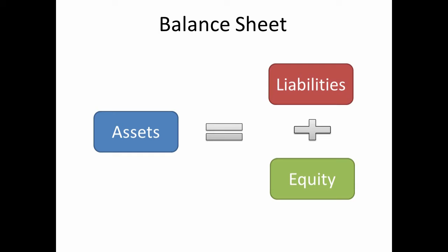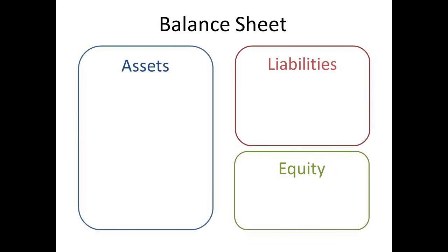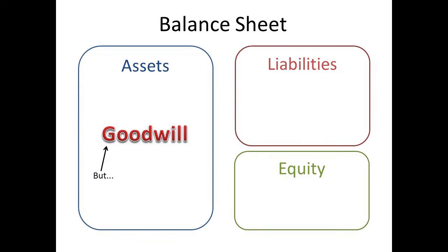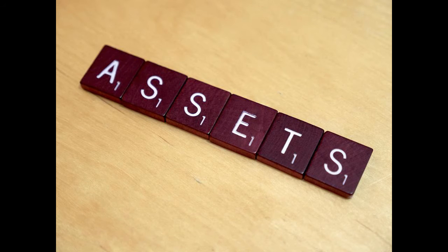So where would you find Goodwill on this? Well, it actually goes in the asset section, but you'll only see it there if the company has purchased another company in the past. So let's take a closer look at the different types of assets that a company might have.